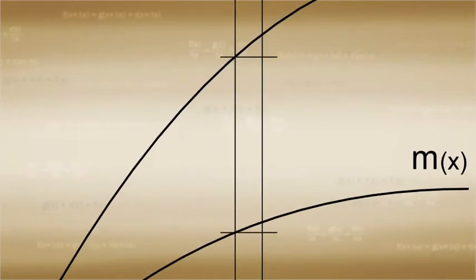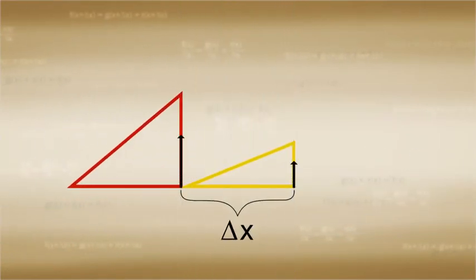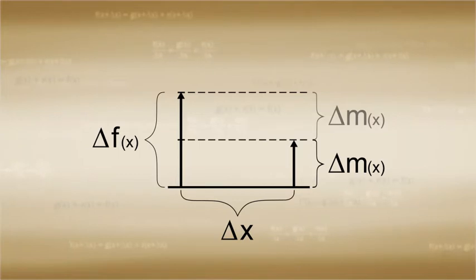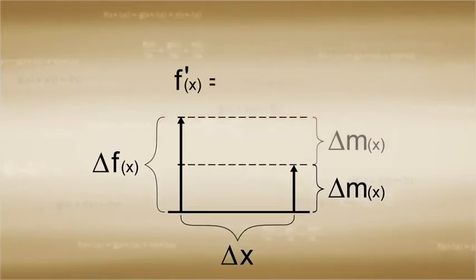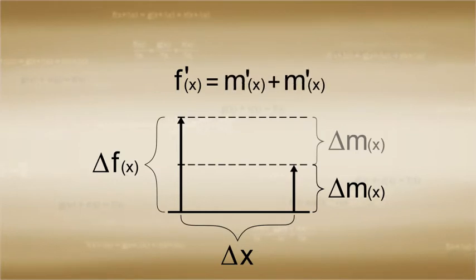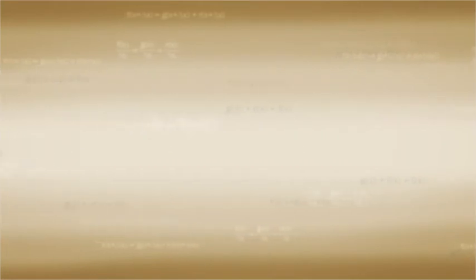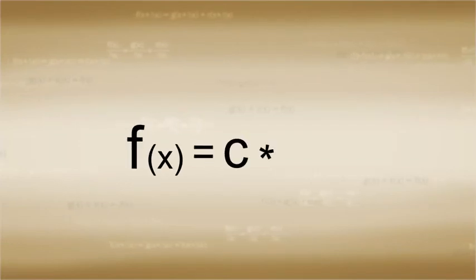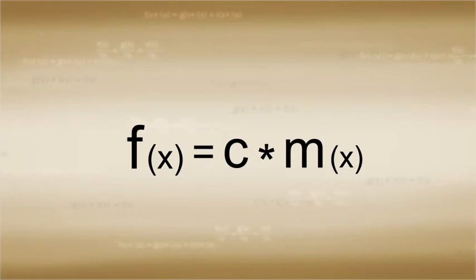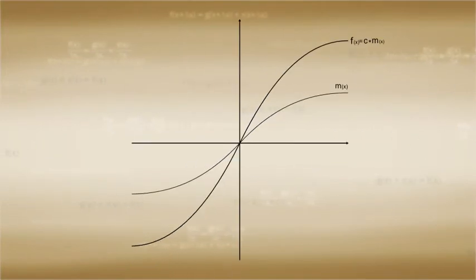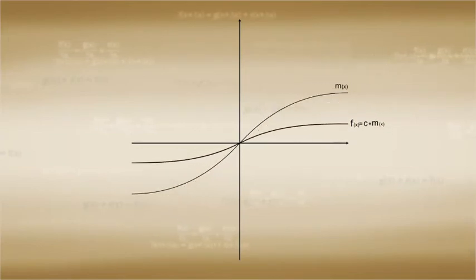Moreover, the change in the function f of x has to be twice as large as the change in m of x over the same stretch of x distance. This means that the derivative of f of x is always twice that of m of x. Therefore, f prime of x is equal to m prime of x plus m prime of x, which is equal to two times m prime of x. We can generalize this principle: if f of x is equal to some constant c multiplied by m of x, then the derivative f prime of x is equal to that same constant c times m prime of x.